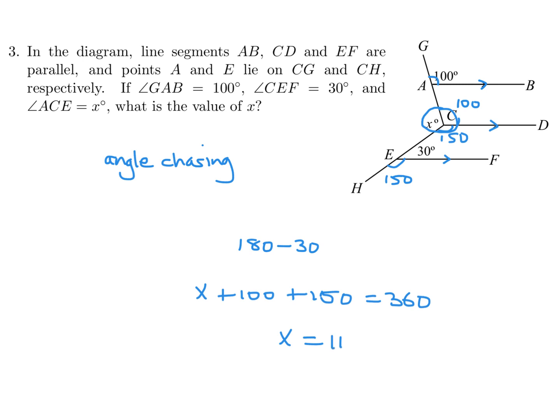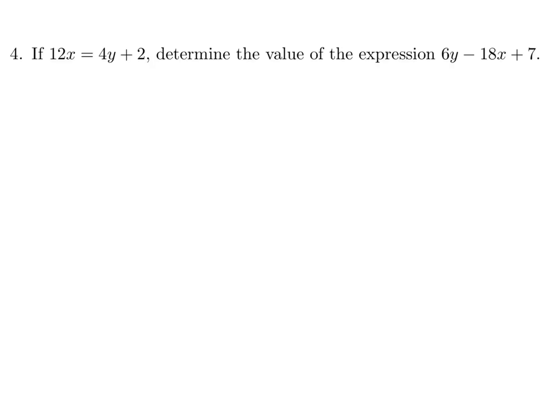If 12X is equal to 4Y plus 2, determine the value of the expression 6Y minus 18X plus 7. At first glance it seems a bit weird—do I use inspection here or what do I do? But it looks kind of similar. Let me rearrange it first, so 4Y minus 12X is equal to minus 2.